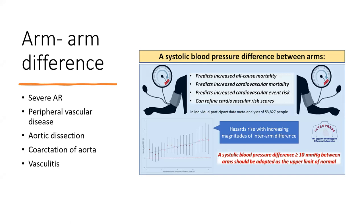Causes of arm-to-arm difference include severe peripheral vascular disease, aortic dissection, coarctation, and vasculitis. Importantly, a systolic BP difference of more than 10 mmHg between arms should be taken as the upper limit of normal. A difference greater than this predicts increased all-cause mortality, increased cardiovascular mortality, and increased cardiovascular event risk. Measuring arm-to-arm difference at least at initial diagnosis is therefore very important.